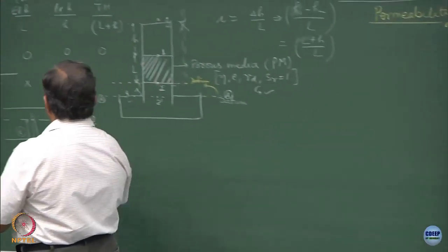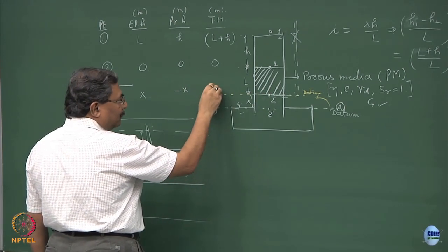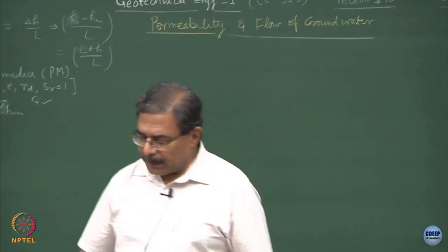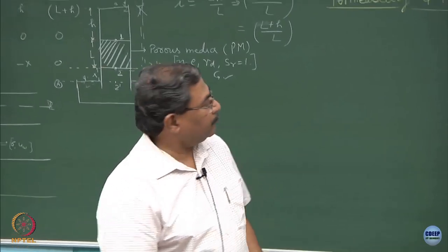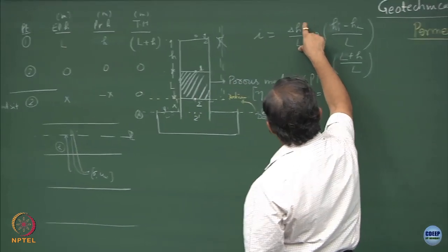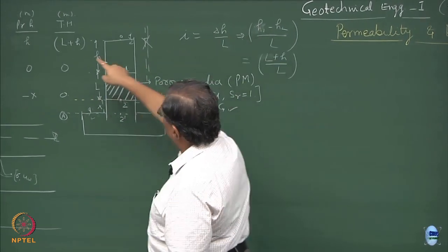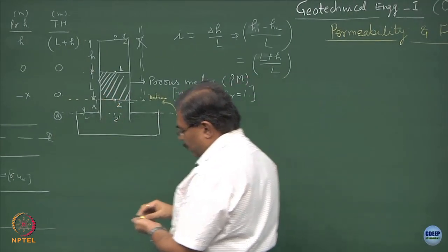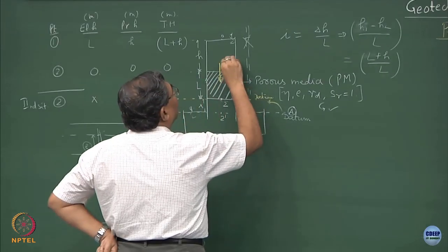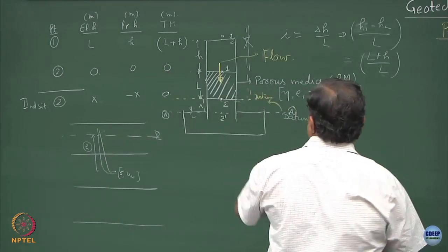Another way: if the elevation head at point 2 is x and you install a piezometer, it drops to minus x and the total head equals 0. The better approach is to shift the datum and proceed with the analysis. We have established that the pressure gradient across the sample is delta H upon L, and delta H upon L equals H1 minus H2 upon L. H2 is 0, so H1 equals L plus H divided by L is the hydraulic gradient.